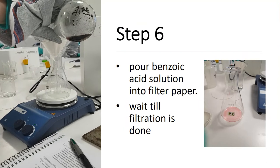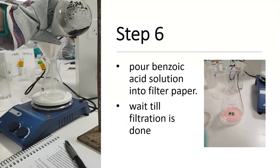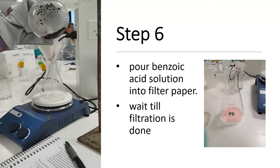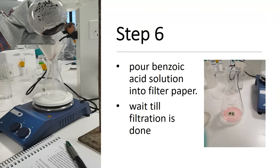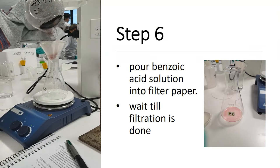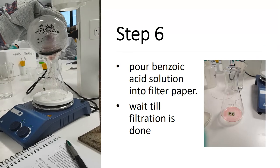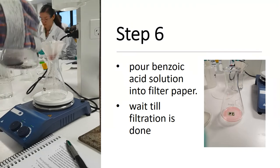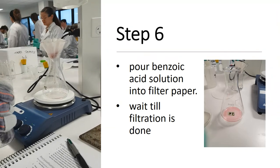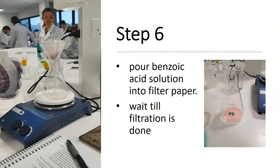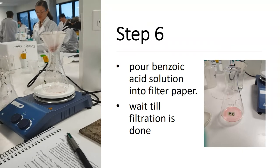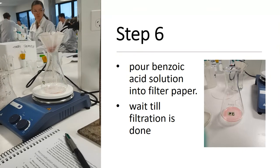Step 6. Filter the benzoic acid solution into the second clean and now hot conical flask. This may take a few minutes to filter, and if the benzoic acid recrystallises while filtering, wash with a small amount of boiling water. Once all liquid has passed through the funnel, remove from the heat and turn off the hot plate.